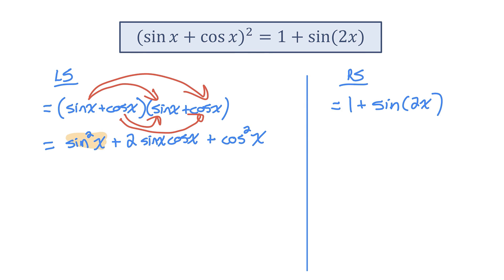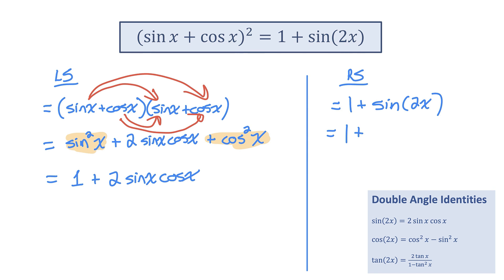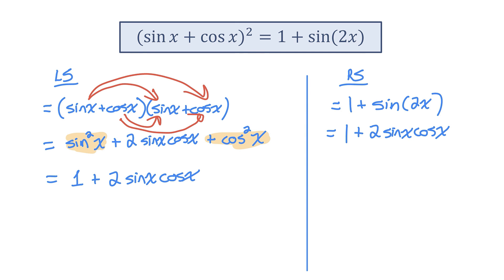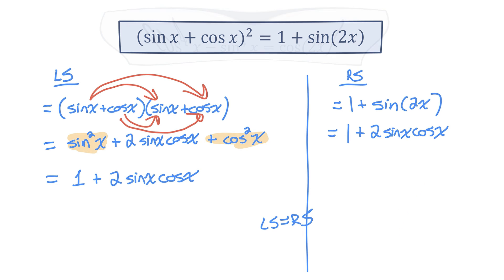Notice that I have a sine squared x plus a cosine squared x. The Pythagorean identity tells me that's equal to one, so I can replace that sum with one. So I have 1 plus 2 sine x cos x. And on the right side of this equation, the double angle identity tells me that sine of 2x is equal to 2 times sine x cos x. Left and right side are equal — that identity is proven.